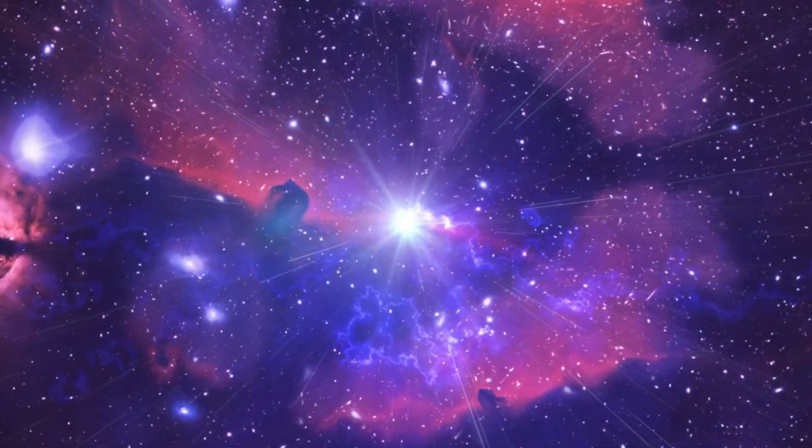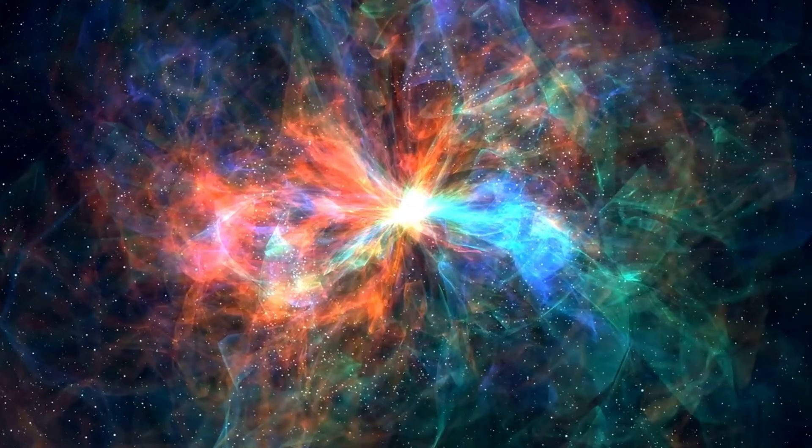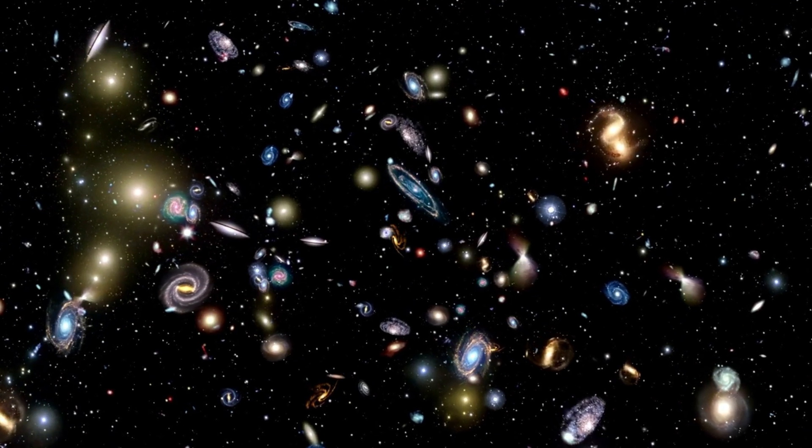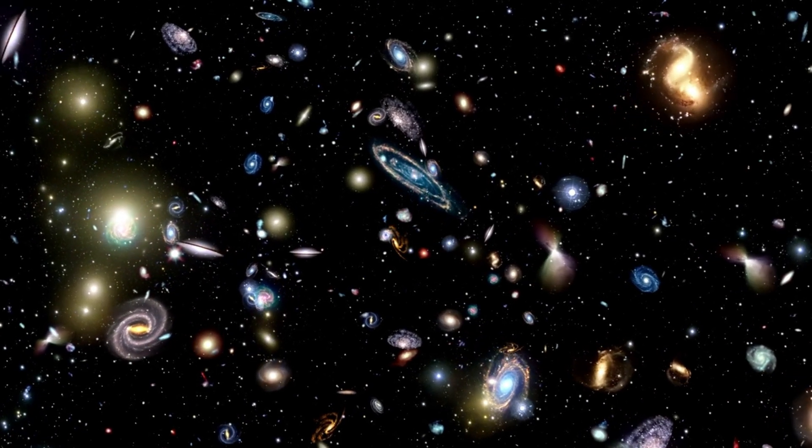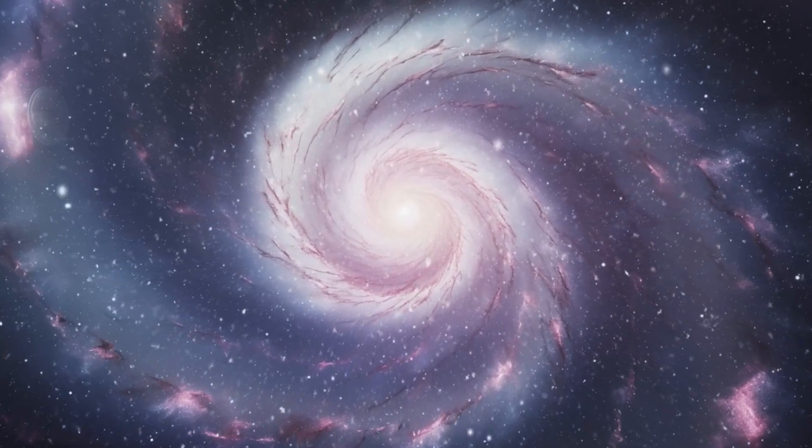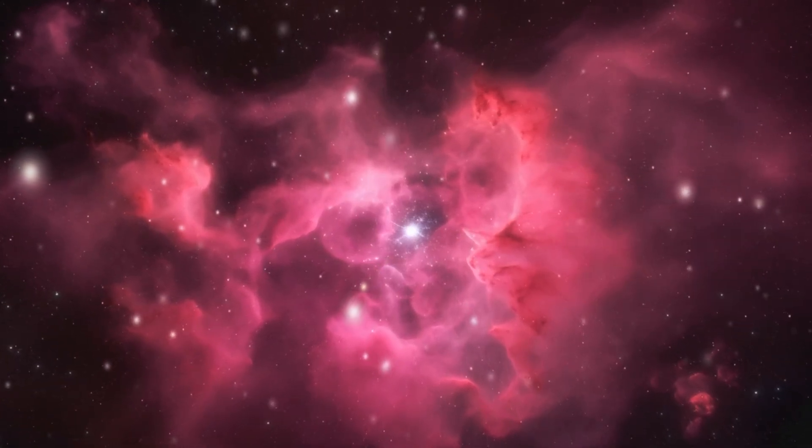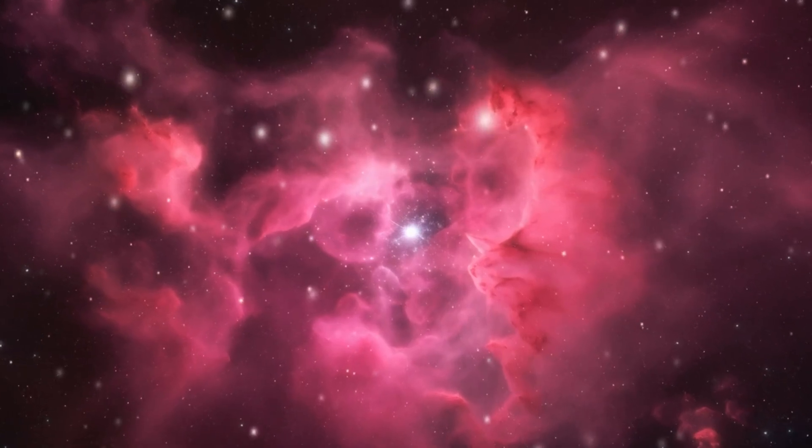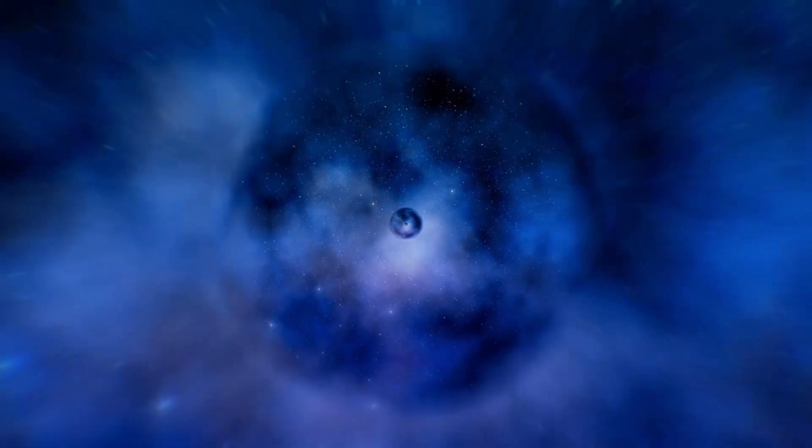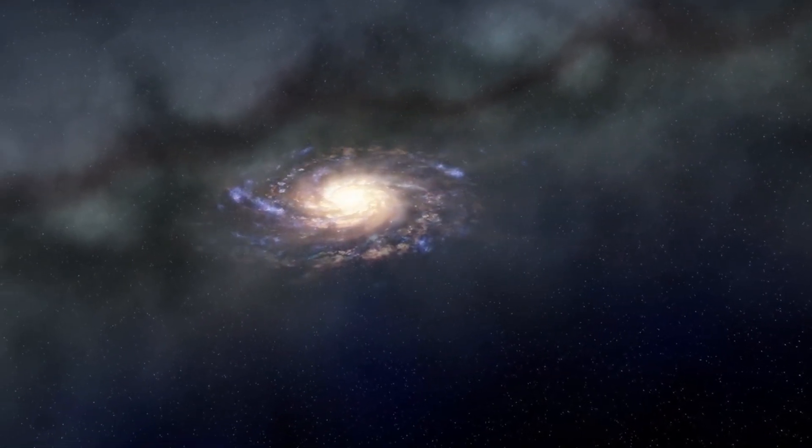Betelgeuse isn't only a considerable superstar within the Orion constellation, but additionally plays a critical role within the study of stellar evolution. Its length and distinct traits make it a wonderful laboratory for information about the lifestyle cycles of large stars. The star is classified as a red supergiant, a category that includes a number of the most important and most exquisite stars within the universe. Observations suggest that Betelgeuse may finally undergo a big change, leading to an outstanding supernova event. This explosion is predicted to produce a neutron star or possibly even a black hole, depending on the remaining mass after the blast. Experts are eager to acquire more records about its behavior, especially with regards to mass loss rates and surface adjustments that could provide insights into comparable stars across the universe.